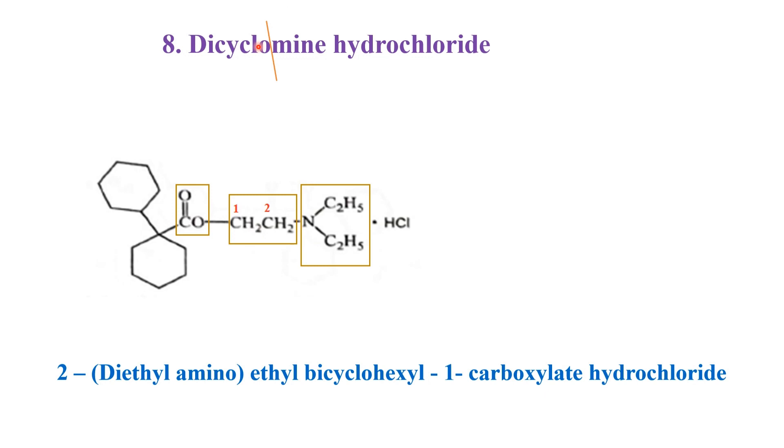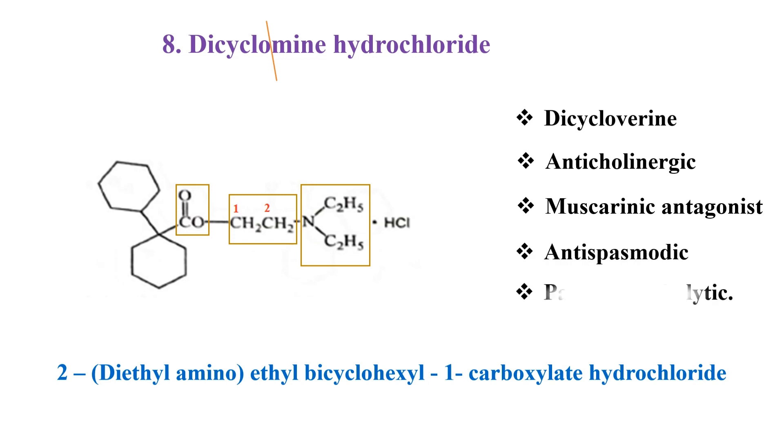This dicyclomine hydrochloride is otherwise called as dicyclovirine and it is an anticholinergic agent. It is a muscarinic antagonist, an antispasmodic agent and a parasympatholytic agent.